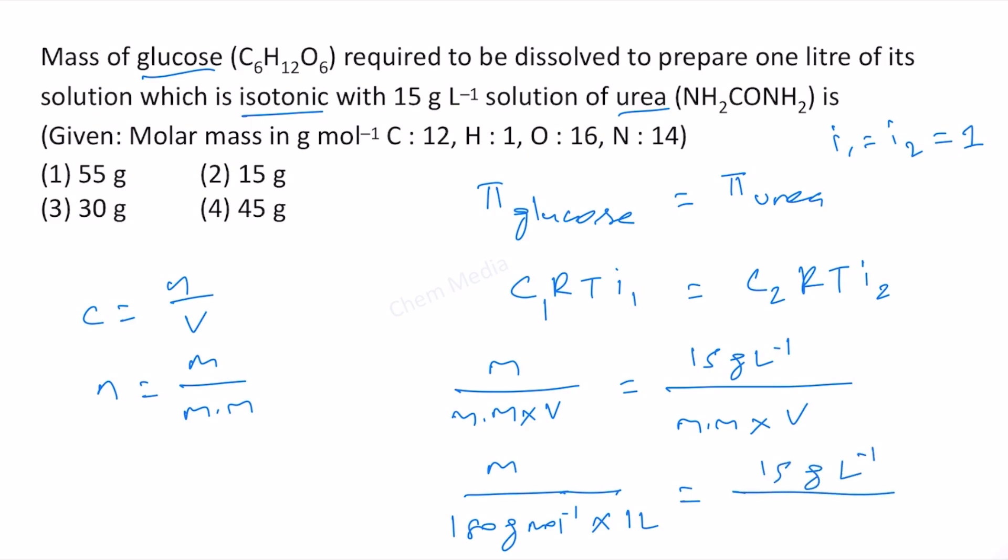On this side, 15 gram per liter divided by molar mass of urea is 60 gram per mole, volume is 1 liter.